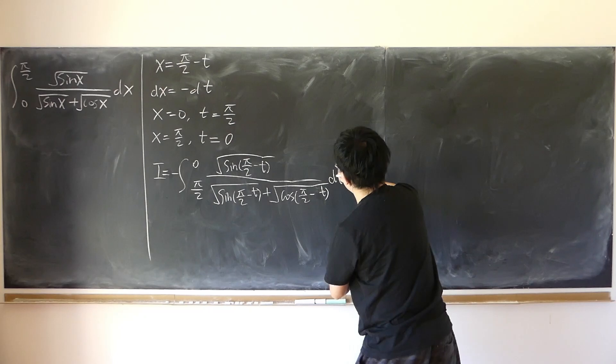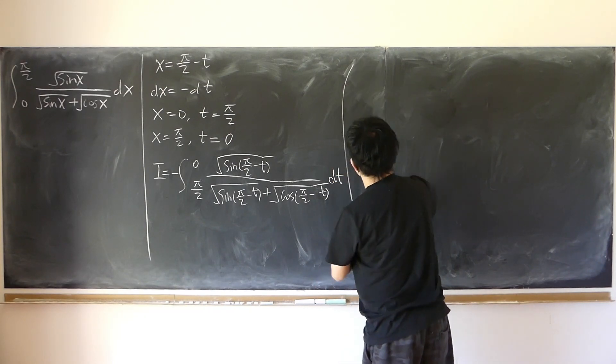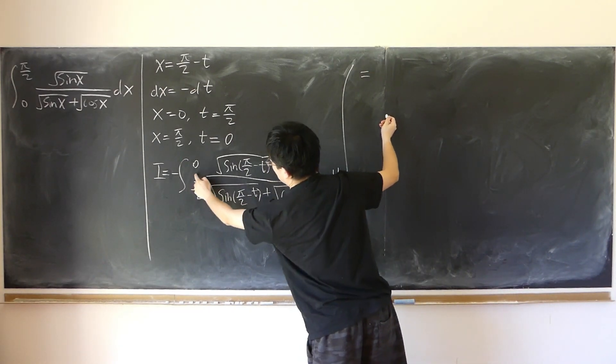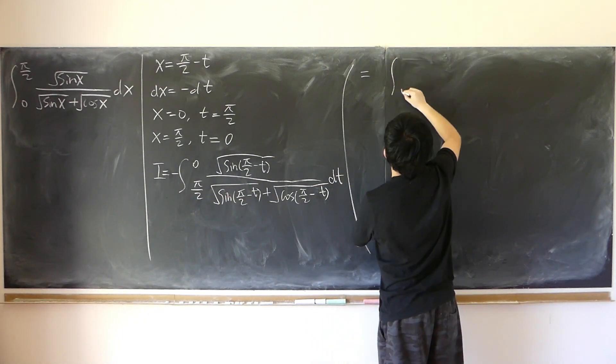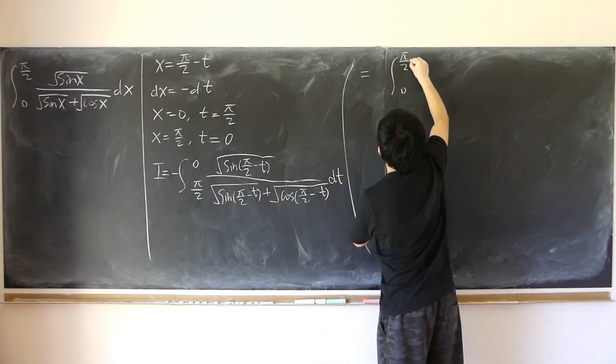And dt. That's equal to, just get rid of negative sign, change the boundaries, 0 to half pi, switch the boundaries.